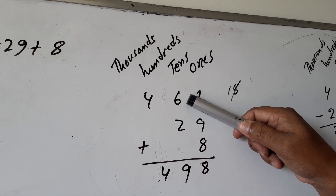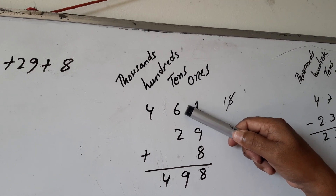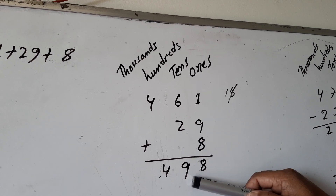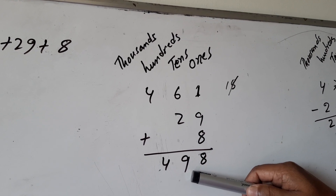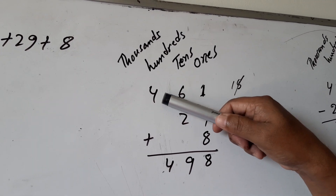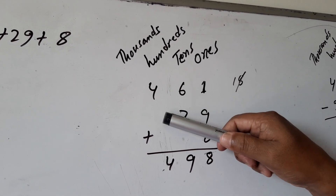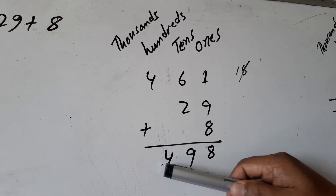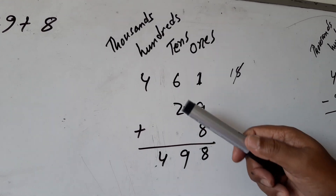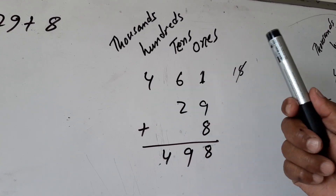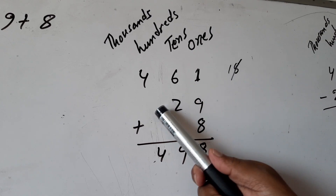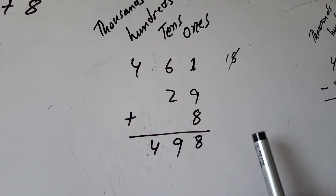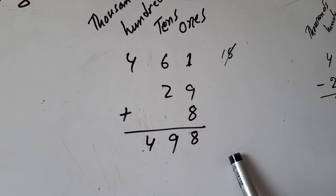6 plus 1 is 7, plus 2 is 9 — write 9 here. Now, here is 4 and here is nothing, that means 0, so 4 will be written here. 461 plus 29 plus 8 equals 498.